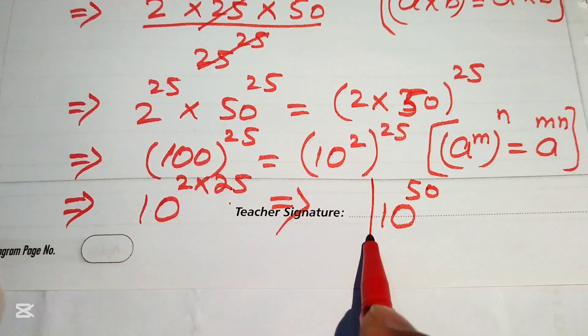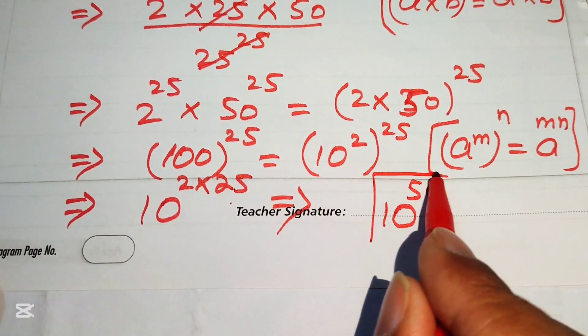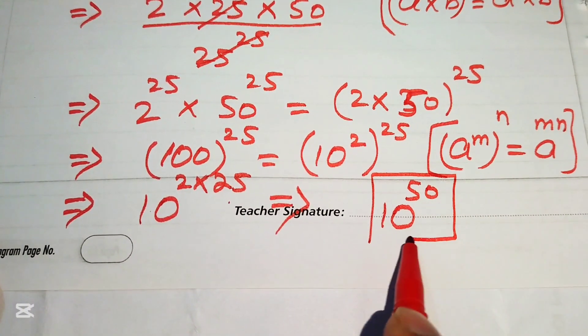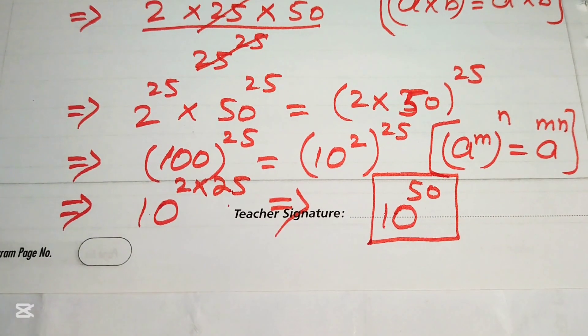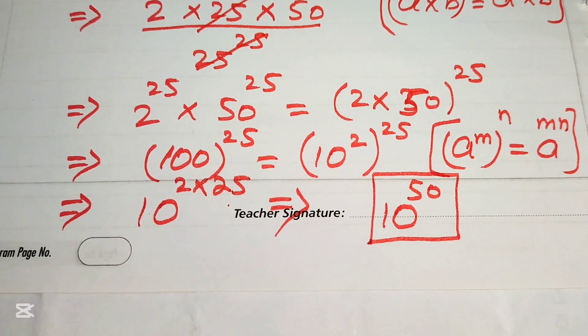So 10 to the power of 50 is our final simplified form — the lowest form of the given expression. Thank you so much for watching this video. Please subscribe to my channel for more exciting videos.